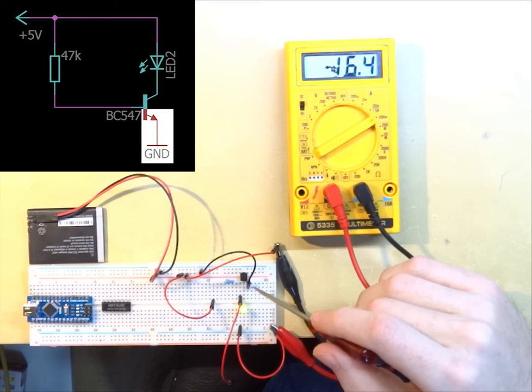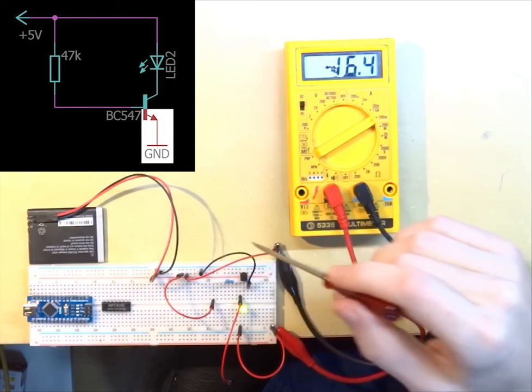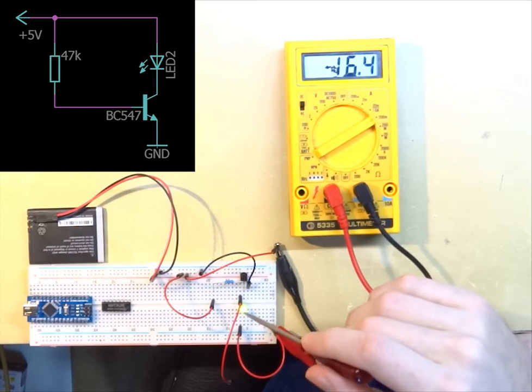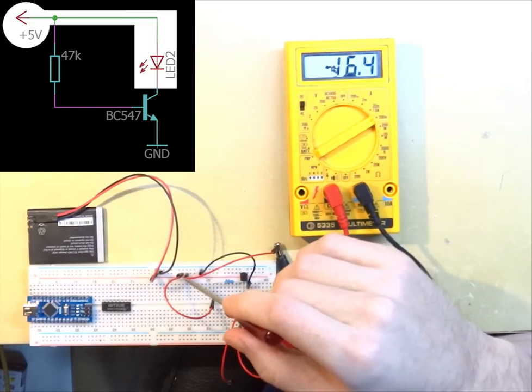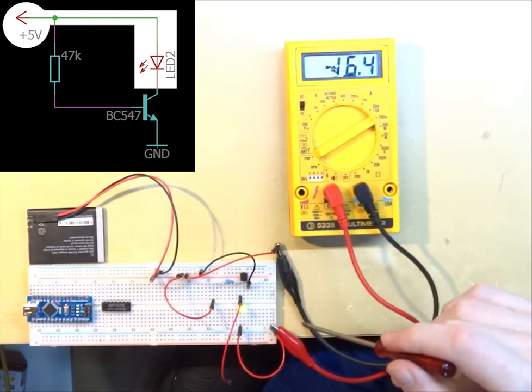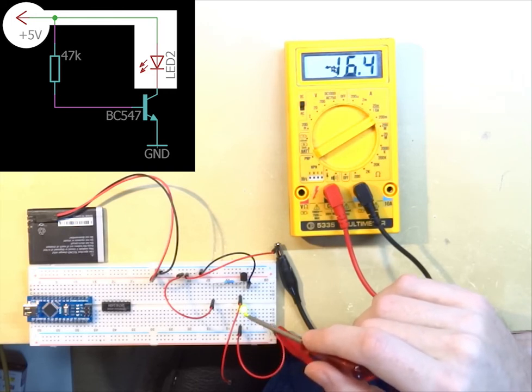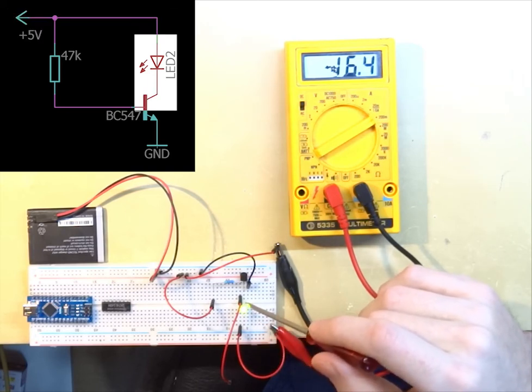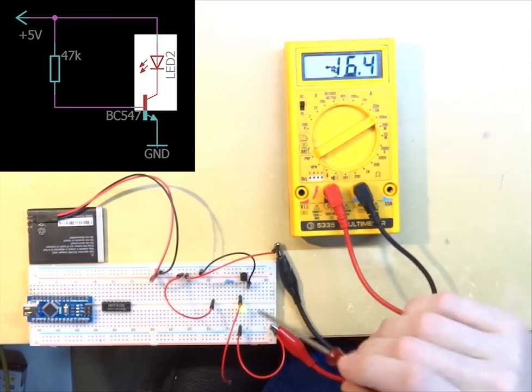Then the power for the LED is coming from the battery through the meter, back through the meter, through the LED, and goes to the collector of the transistor.